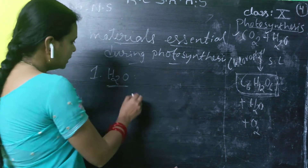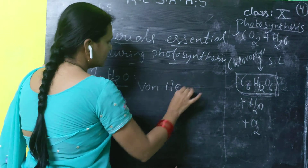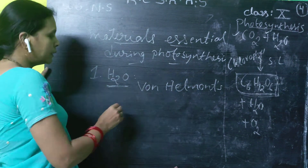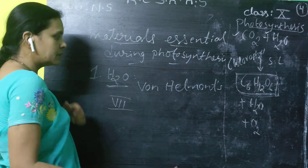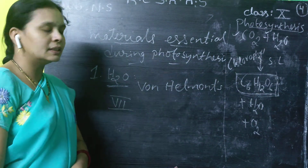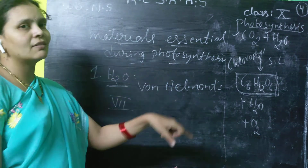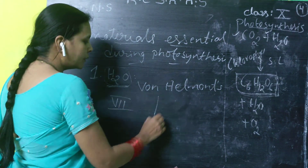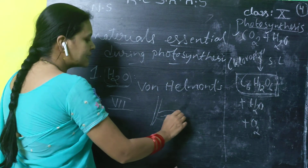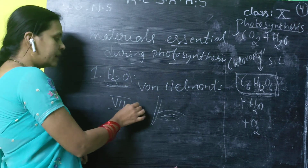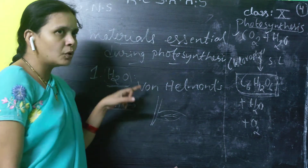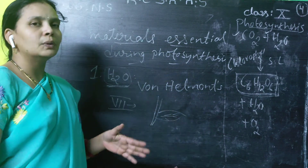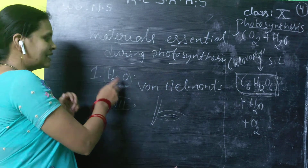The scientist Van Helmont conducted an experiment — which we already studied in the 7th class science — about water being an essential requirement for the plant during photosynthesis. By supplying water, the plant body grows and the plant's mass increases by taking in water. So water is one of the important essential factors during photosynthesis. The plant requires water to increase its growth, to increase its mass, and to grow up. Water is therefore an essential factor.